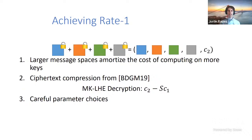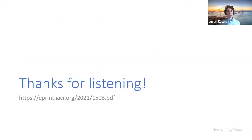To achieve rate one, we observe that a larger message space amortizes the cost of more keys — useful when compiling protocols whose messages scale with the number of parties. The second tool is a ciphertext compression algorithm from Brakurski et al., which crucially relies on the linear decryption of multi-key linearly homomorphic encryption. Combining both tools with careful parameter choices achieves rate one.